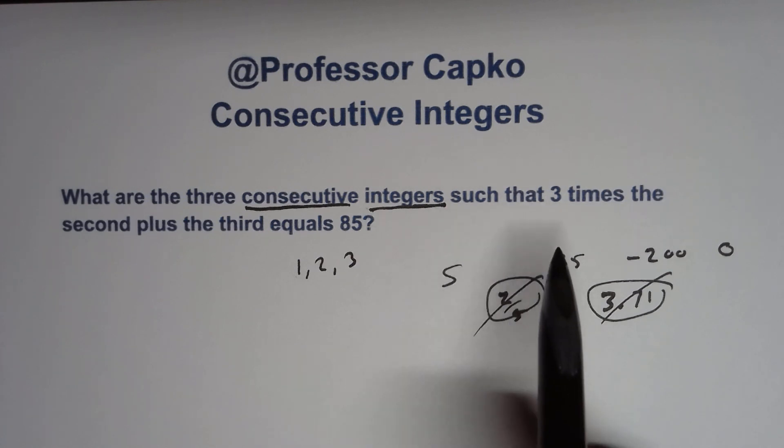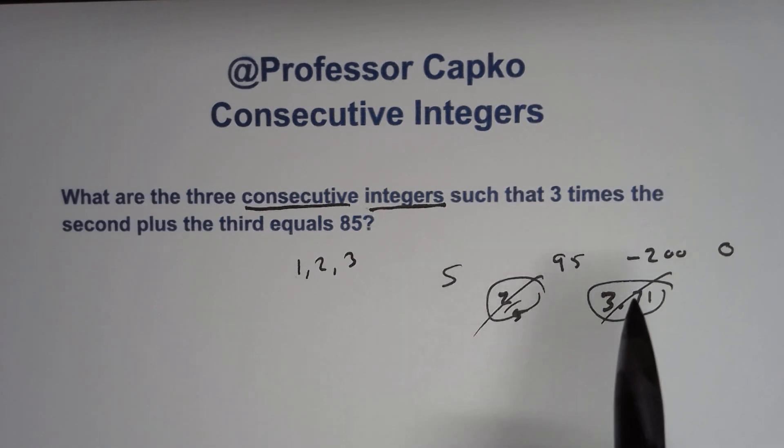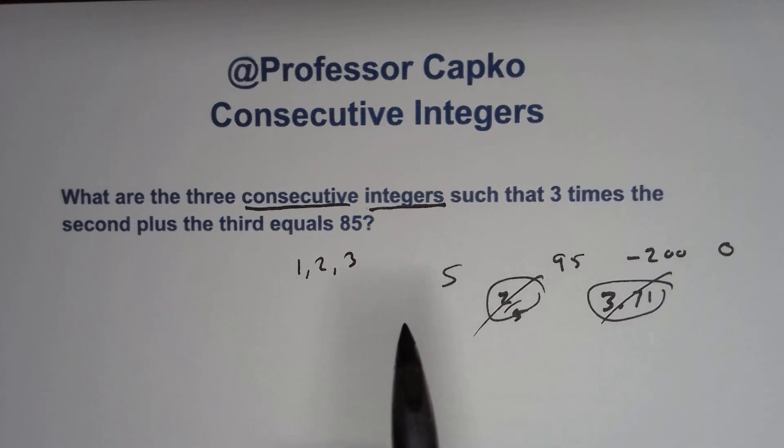That's just an example. It could be 10, 11, 12. So just three consecutive integers and they are going to add up if you multiply three times the second one and then add the third one, it's going to equal 85. So let's dig into this a little more.